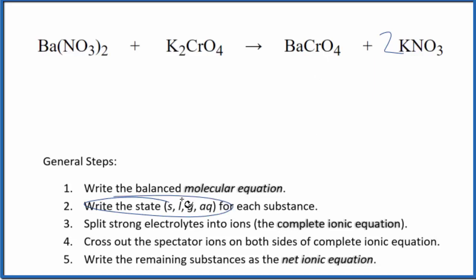Now we can write the state for each substance. If you know your solubility rules, nitrates are very soluble. We write aq for aqueous. This will dissolve, split up into its ions. Chromates, we have a potassium compound. Those are very soluble too. We're going to put an aq since we have potassium chromate.